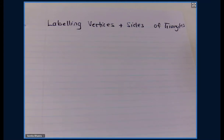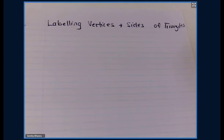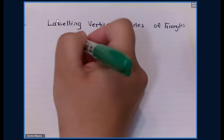What we're looking at today with labeling vertices and sides is that each vertex of a triangle is labeled with a different capital letter, and then the side opposite each vertex is labeled with the same letter only in lowercase.